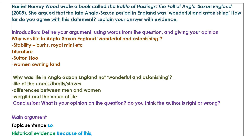Literature, Sutton Hoo and works of art, women owning land. But then you've got to look at the other side of the essay: why was life in Anglo-Saxon England not wonderful and astonishing? Here you might bring in the lives of the churls, the thralls and the way that slavery worked. You might look at the differences between men and women and how they were treated in society, and you might look at the idea of the Virgild and the value of life. Then you need a conclusion — what is your opinion? Do you think that the author, Harriet Harvey Wood, was right or wrong to argue that Anglo-Saxon England was wonderful and astonishing?